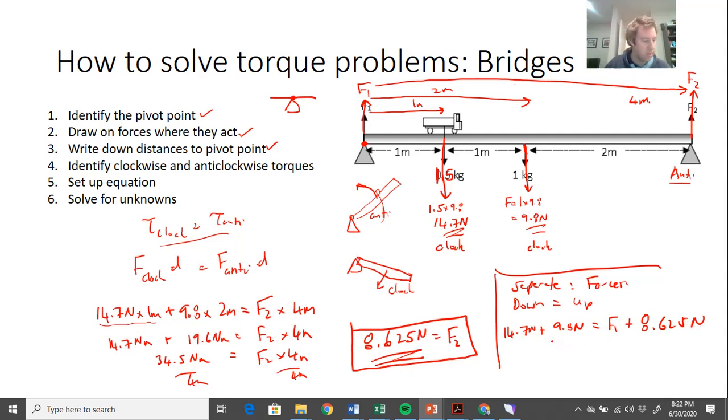And so then I can rearrange and solve this. 14.7 plus 9.8 minus 8.625, so that gives me F1 equals 15.875.